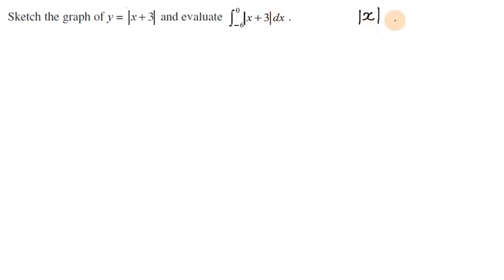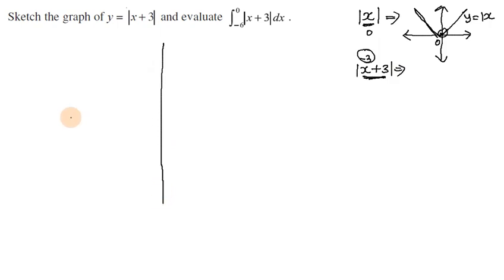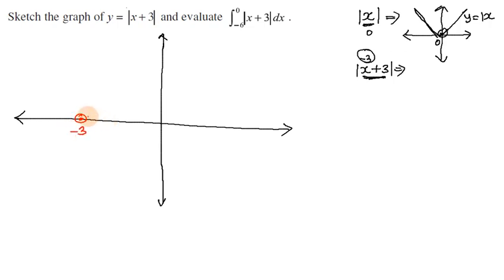First we will see the graph of modulus of x. We put the x-y axis and put x equal to 0. For y equal to modulus of x plus 3, we put minus 3 in the value of x to get zero, so the vertex is at x equal to minus 3. This gives us the shifted graph.